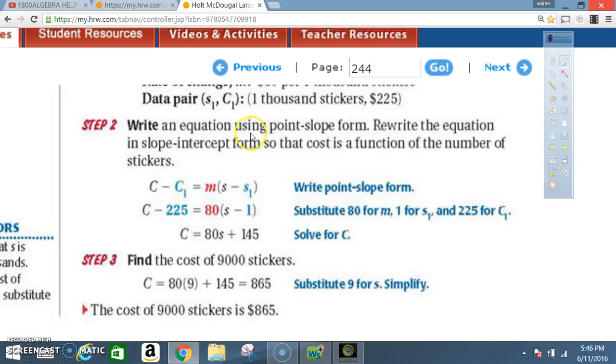Step two. Write an equation using point slope form. Rewrite the equation in slope intercept form so that the cost is a function of the number of stickers. So, writing the equation in point slope form, it should look like C minus C1 is equal to M times S minus S1. Now, substitute 80 for M, that was our rate of change. 1 for S, that's based on 1,000. And $225 for C1. And once again, that should be for S of 1. And, of course, the rate of change for M, the slope.